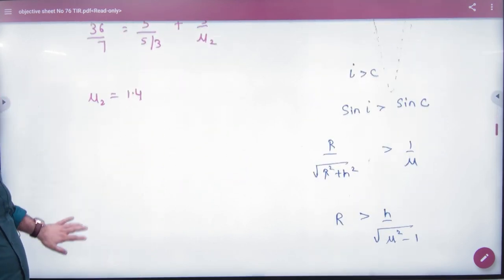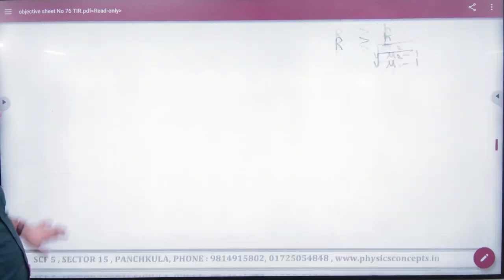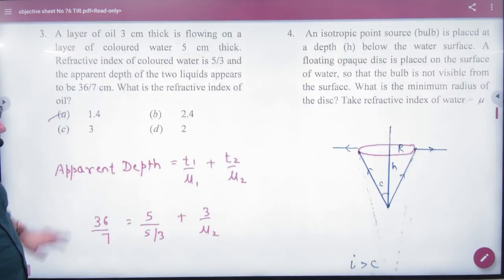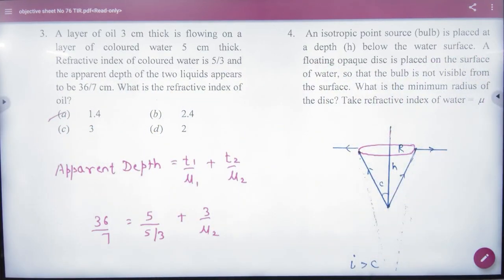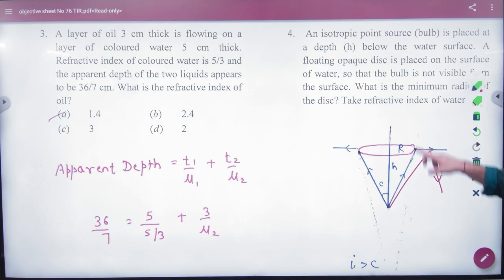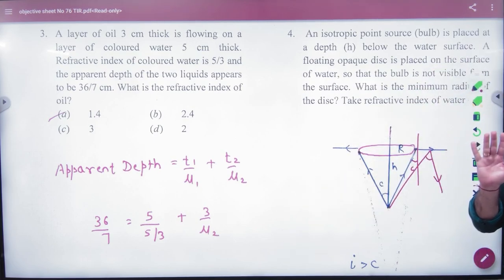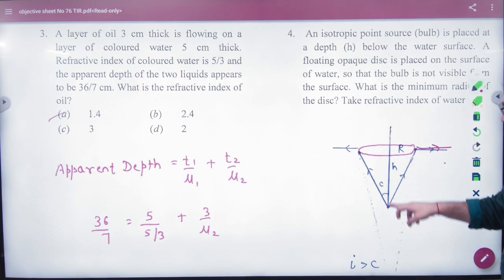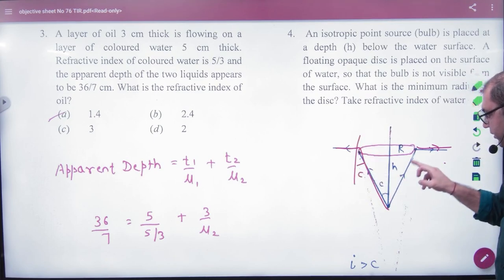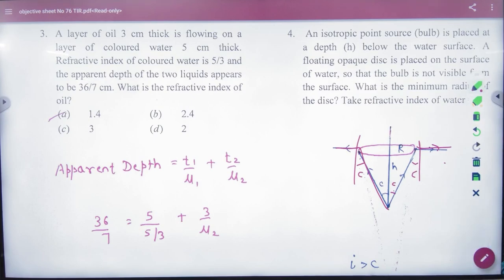Question number 4. An isotropic point source, a bulb, is placed at a depth of H below the water. A floating opaque disk is placed on the surface of the water so that the bulb is not visible from the surface. We had done this last time. Light, if you focus here after making critical angle, if an angle greater than critical will be TIR and the light will come back. So what will be the last value? After this, light will come back. So what will be the angle? Critical. This step is clear. I had taught this.